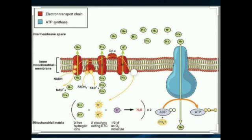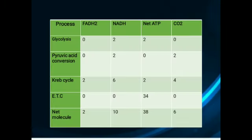Here you can see the diagram of the electron transport chain, in which ions are transported through the chain and ATP molecules are produced by ATP synthase. Here is a summary chart of the products of all processes of cellular respiration. In glycolysis: two NADH and two net ATP are produced. In the Krebs cycle: two FADH2, six NADH, two net ATP, and four carbon dioxide are produced. In the electron transport chain: 34 net ATP molecules are produced. The total net products are two FADH2, ten NADH, 38 net ATP, and six carbon dioxide.